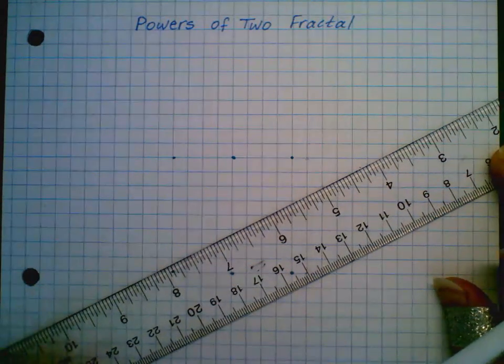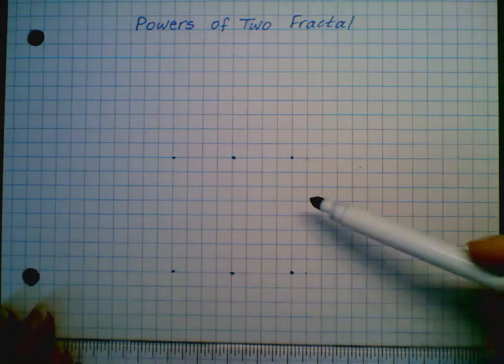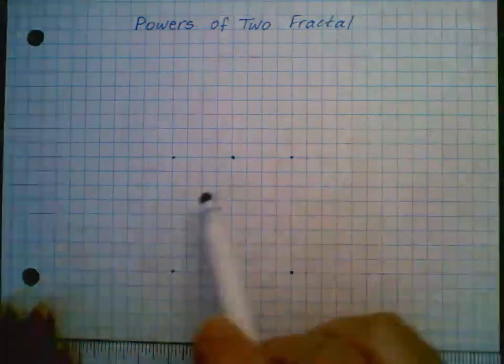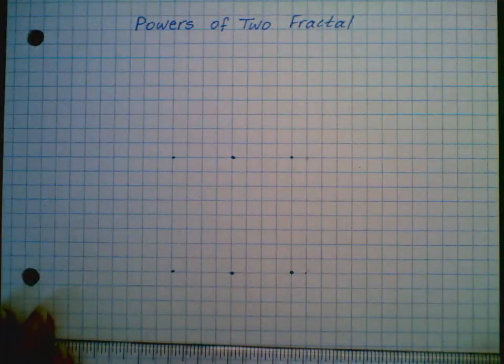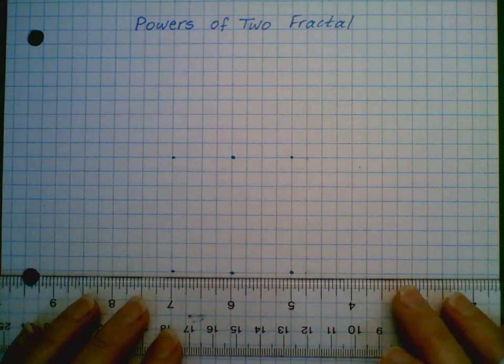To start with, my first square is more or less in the middle of my page because I'm going to need space on each side to be adding the following iterations. Iteration is a step where I've repeated a rule.